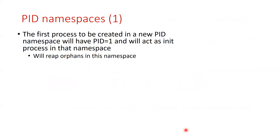The PID namespace basically isolates a set of processes. In a container, if you put processes in their own PID namespace, they will only see each other and will not be able to look at processes outside the container. The first process that creates the PID namespace is given PID equal to 1 — it acts as the init process in that namespace. From then on, whatever processes it spawns get PID 2, 3, 4, and so on, just like a regular system.